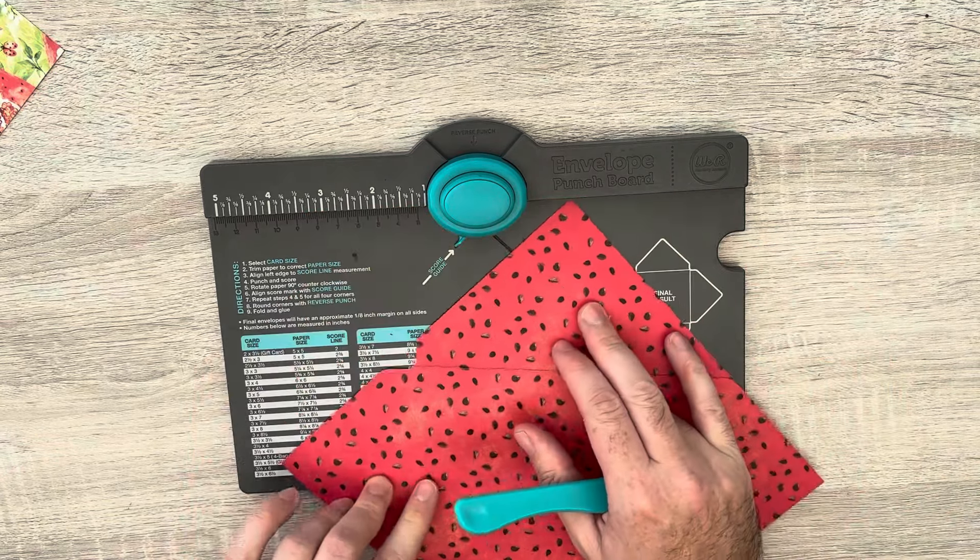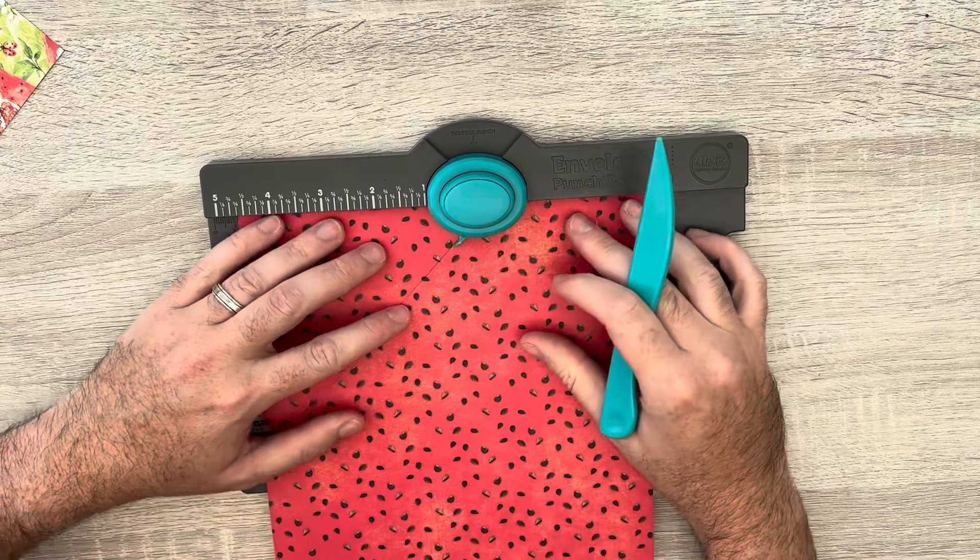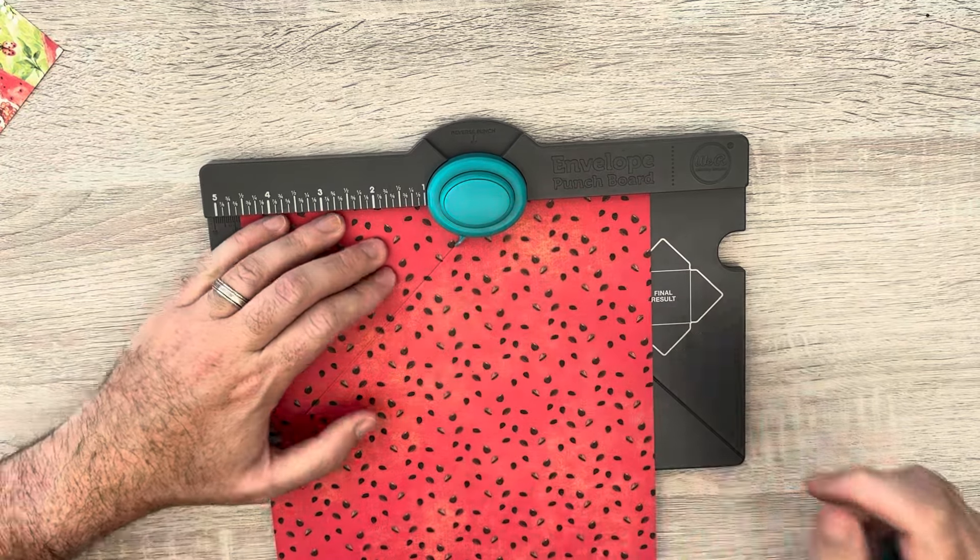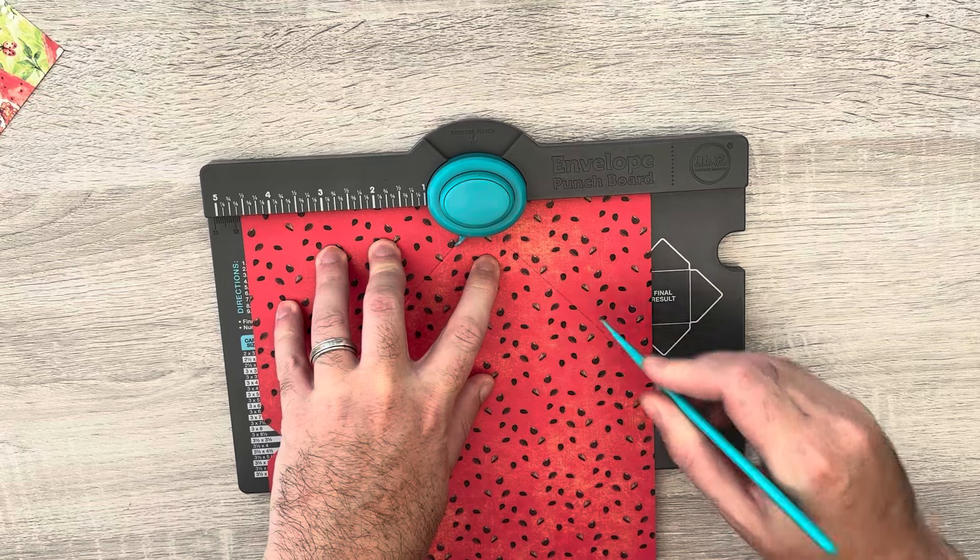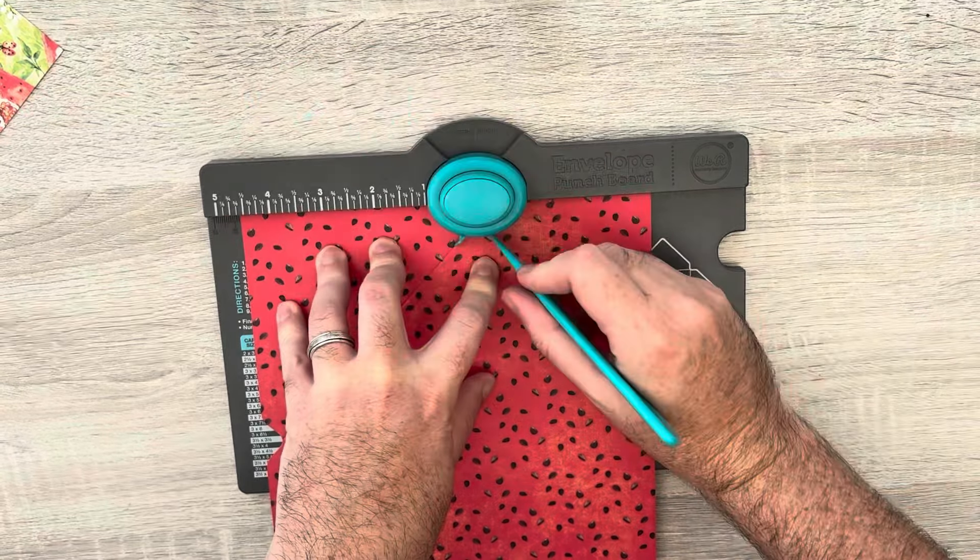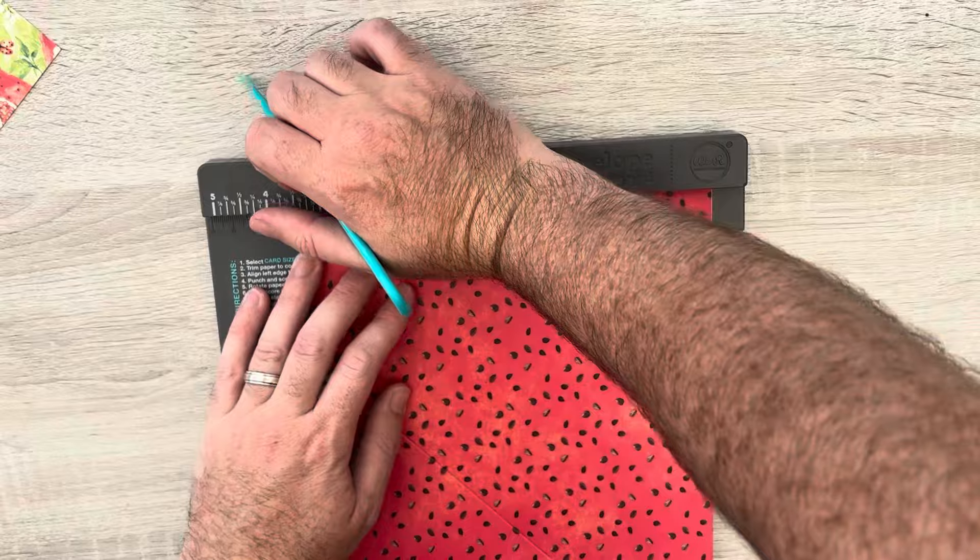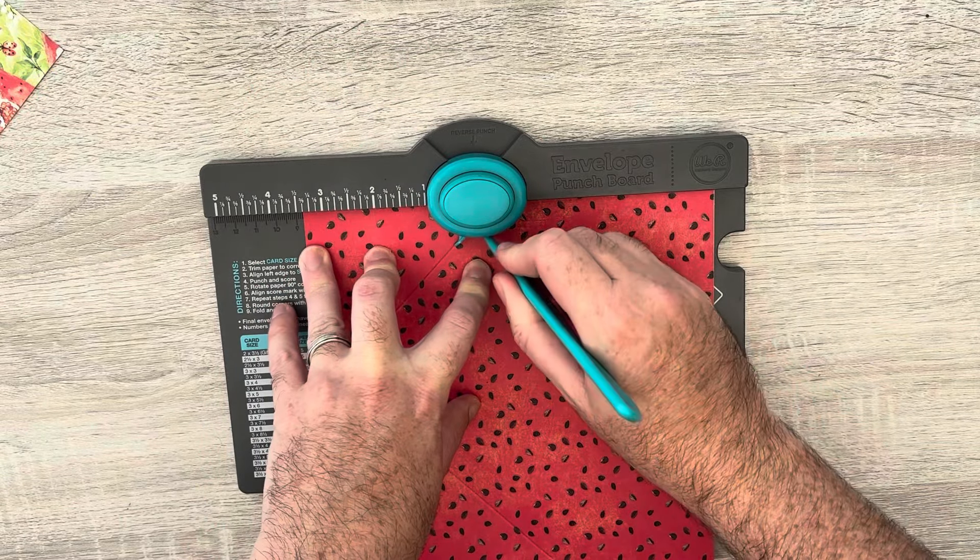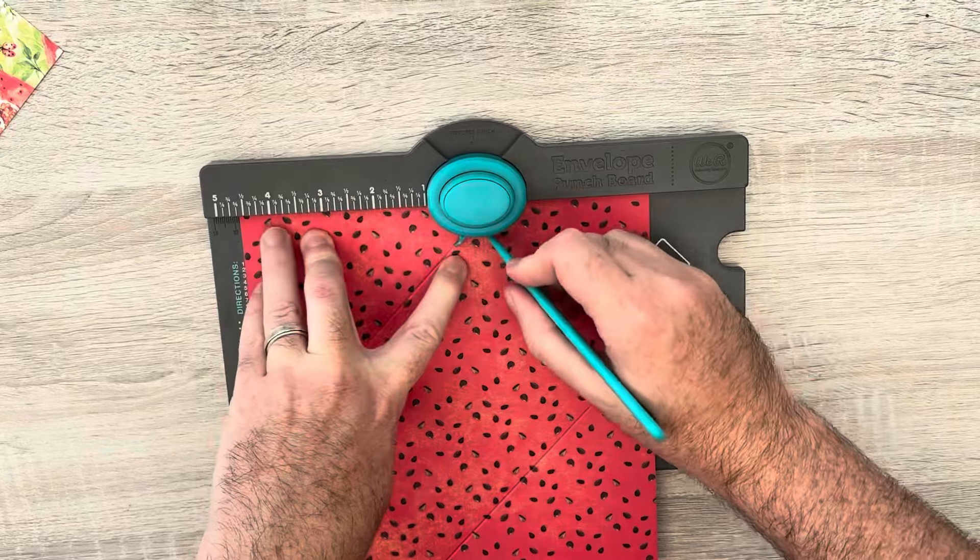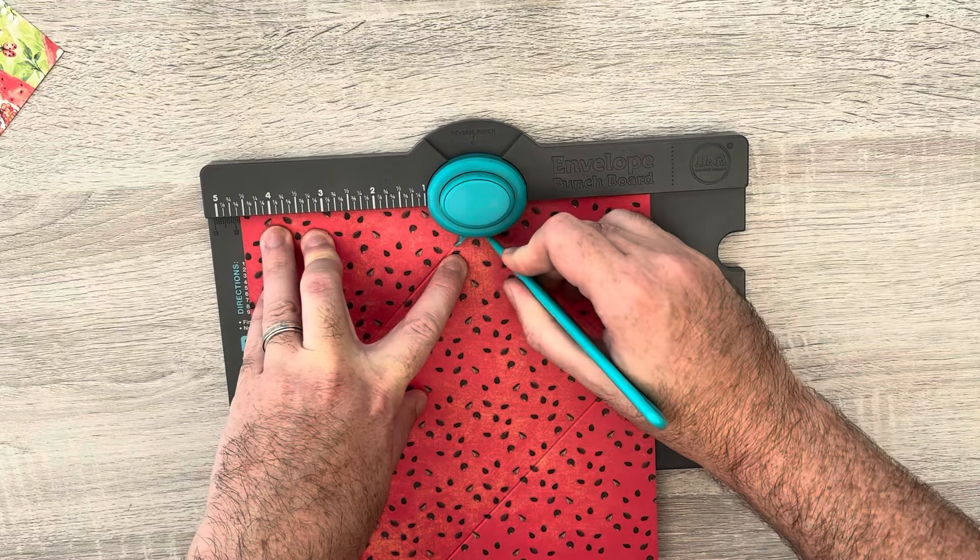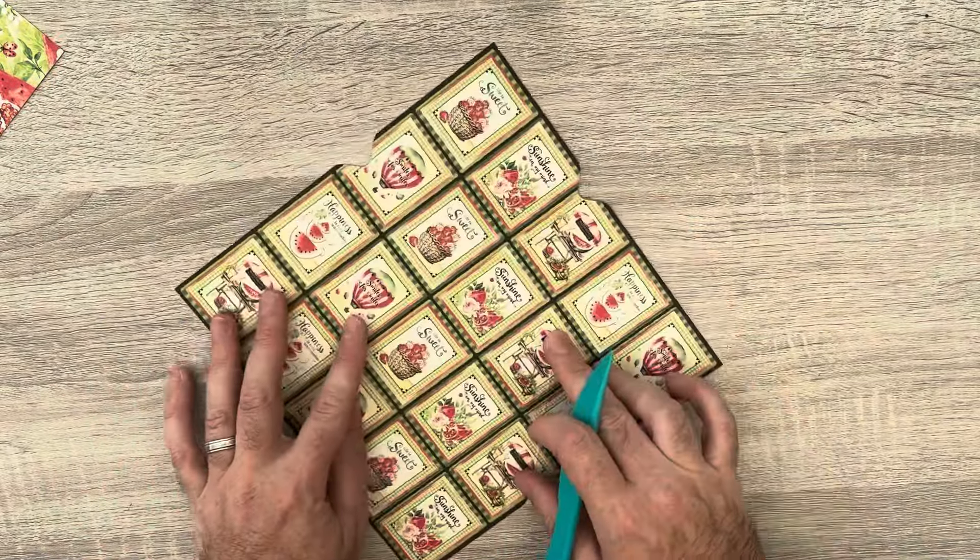And that is all the measurements I need to do for these envelopes. Because what I do now, I rotate it anti-clockwise and there's this little score guide here pointing and I'm going to line that up with the score line I did. Now this little watermelon inside paper is just great for this. So I've just punched and scored. I turn it around, line up that score guide and I punch and I score. And the last one, once more, punch and score.